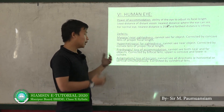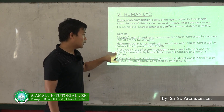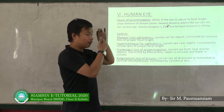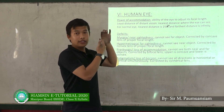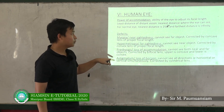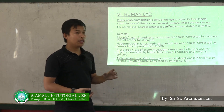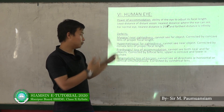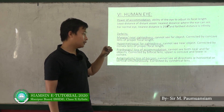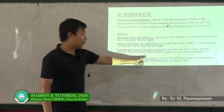For correction, a bifocal lens may be used. Spectacles may use either a concave or convex lens depending on the defect. For Myopia, a concave lens is used; for Hypermetropia, a convex lens is used. A bifocal lens combines both concave and convex corrections.